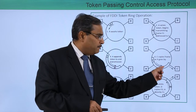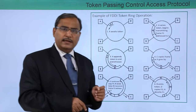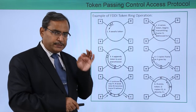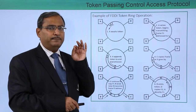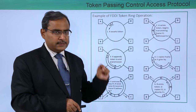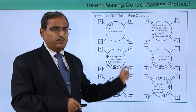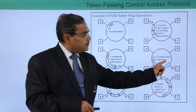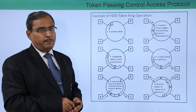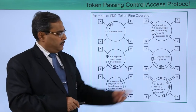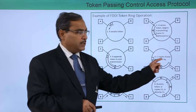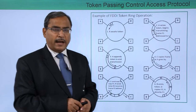When frame F1 is passing in front of C, C will try to read the destination address written in the frame. As this destination address is matching with C's address because the frame was intended for C, C will keep a copy of this frame in its own internal buffer. While this frame is being copied and is still in transmission, the token has been appended back.